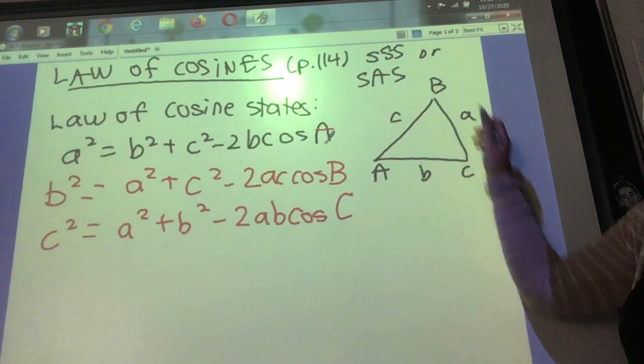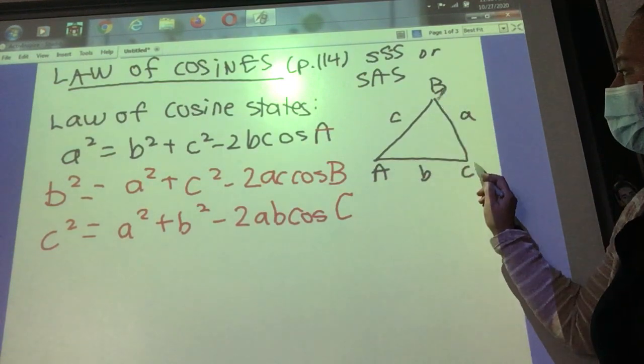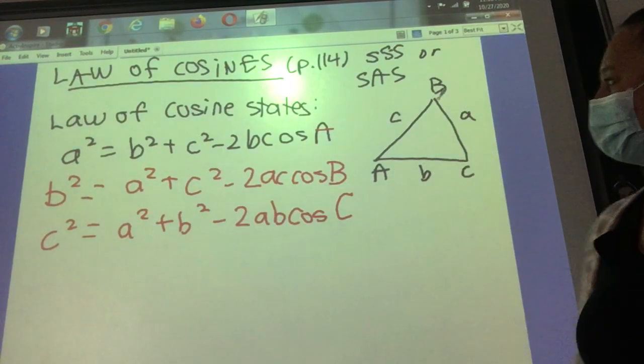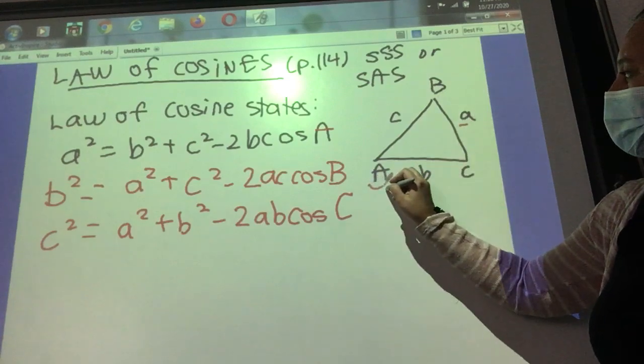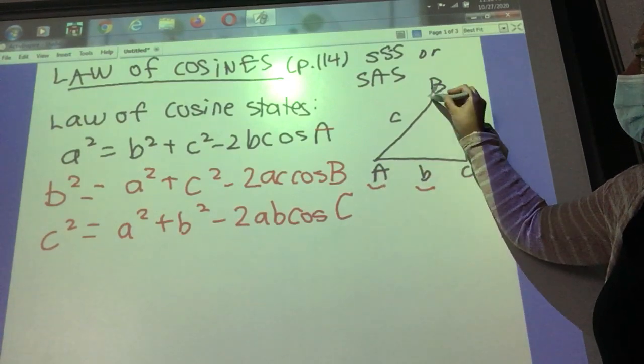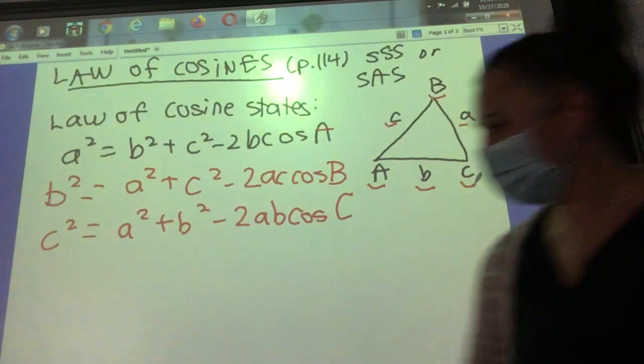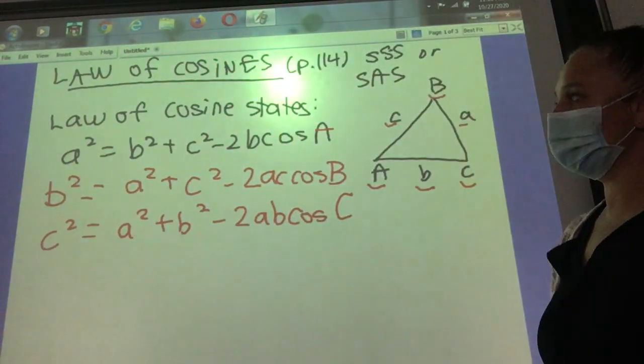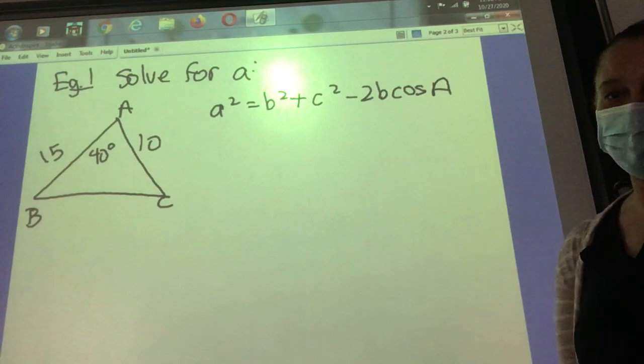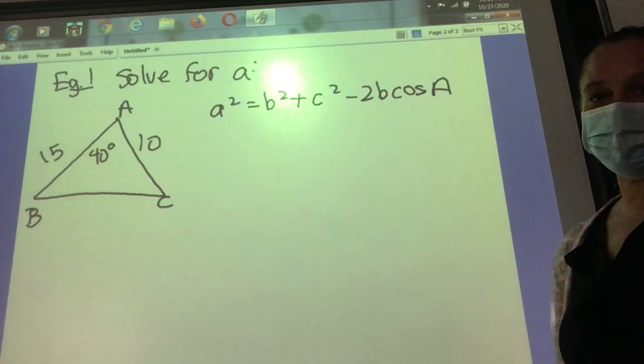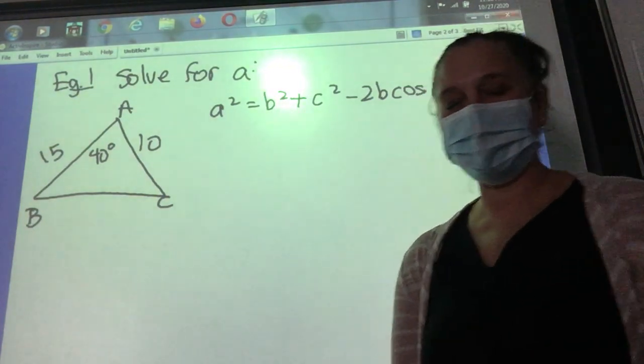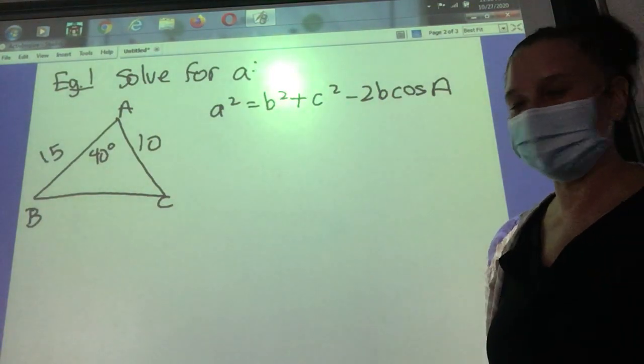Okay, and again that was just a reminder that we use capital letters for the angles, lowercase letters for the side. Side A goes opposite angle A, side B opposite angle B, side C opposite angle C. Okay, so we'll go through two examples. One will solve for a missing side and one for a missing angle. Again, you're still using your scientific calculator. Make sure it's still in the degrees mode from your last lesson.